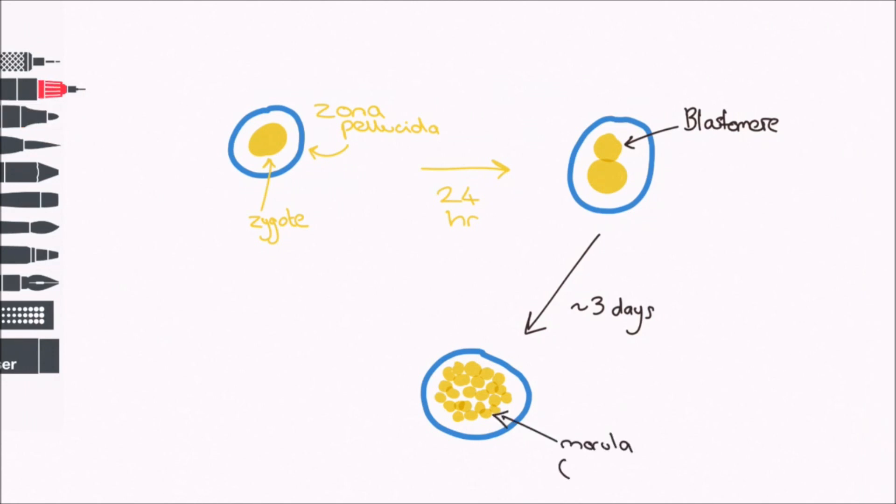During cleavage, the cells do not have much time to grow in between divisions, so the cells are rather small as they do not have time to replenish their cytoplasm.